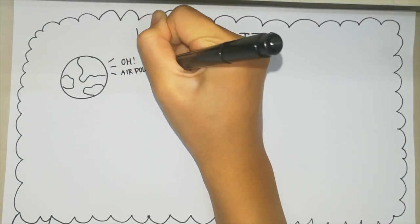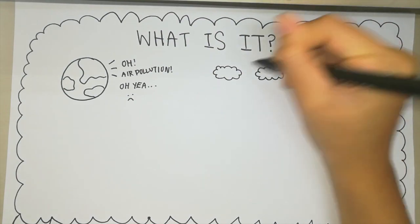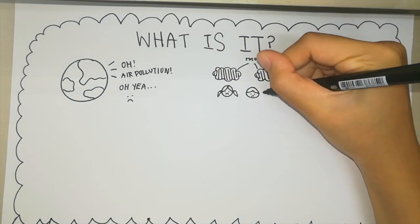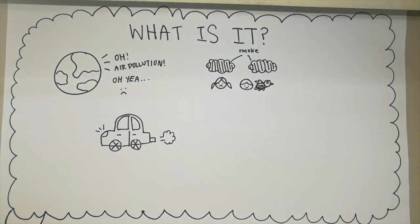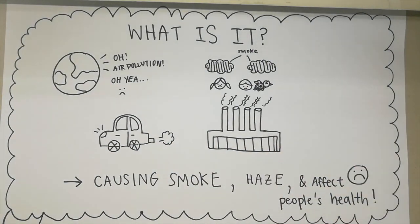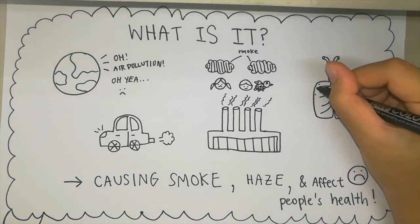So, what is air pollution? It is one of the most known and one of the major environmental issues of the world. It is the release of pollutants into the air that is harmful to humans and the planet as a whole. So everyone gets affected by it, one way or another.